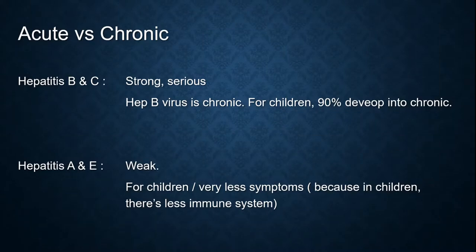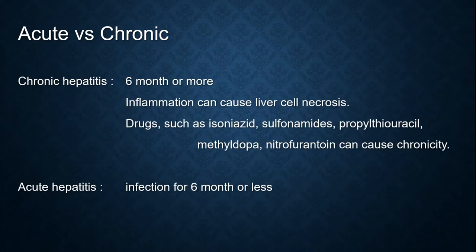Acute hepatitis versus chronic hepatitis. Chronic hepatitis lasts six months or more, and the inflammation can cause liver cell necrosis. Drugs such as isoniazid, sulfonamide, propylthiouracil, methyldopa, and nitrofurantoin can cause chronicity.